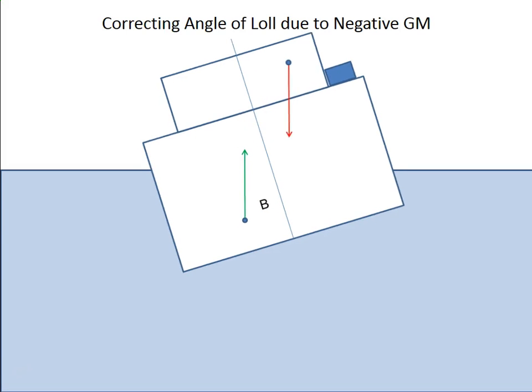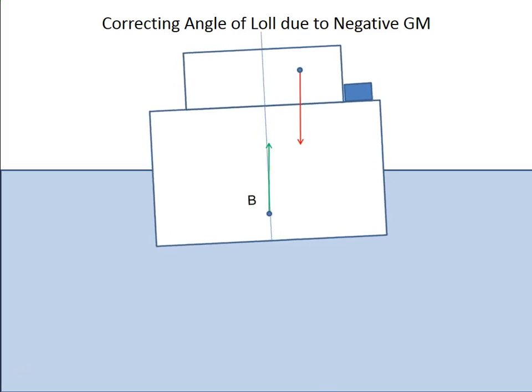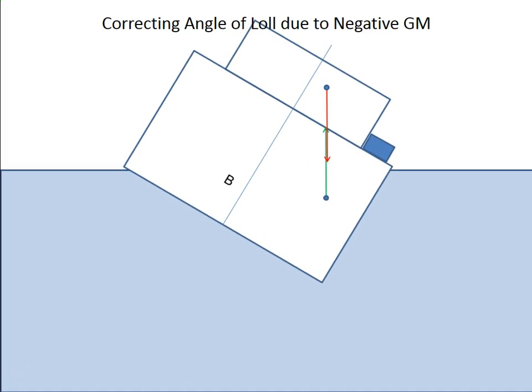Because if we do that, as soon as we put that weight off-center on the starboard side, the vessel is going to start to incline. But the vessel also had a loll to that side. So look what's going to happen here. Loll and list are going to combine now. And the vessel is really going to go a long way. Look, we're right at deck edge immersion here. This is not what you want to do if you have loll.